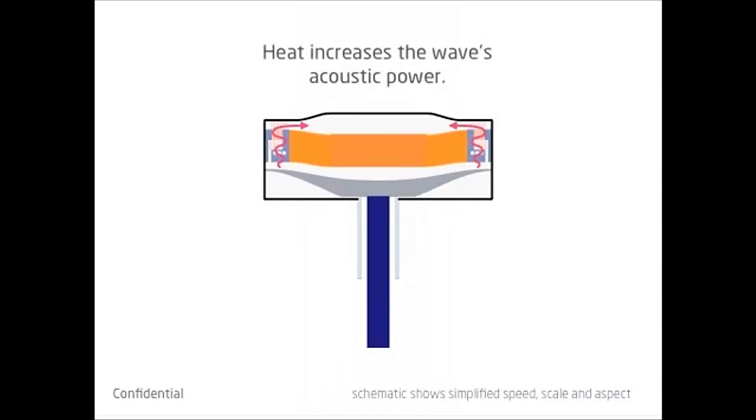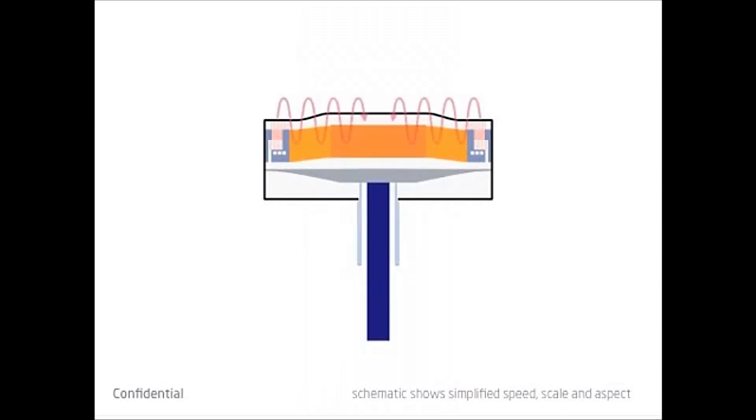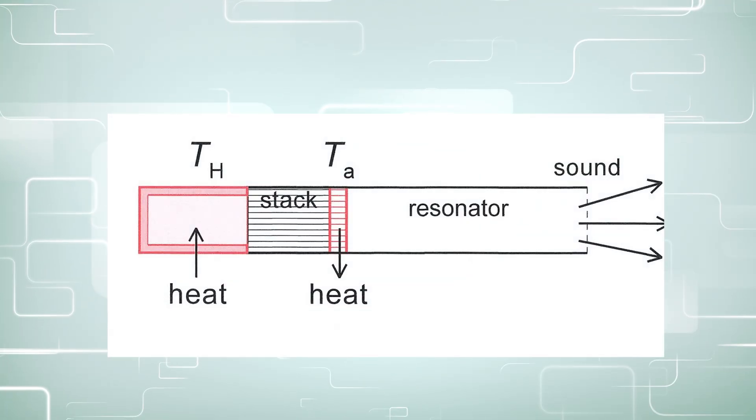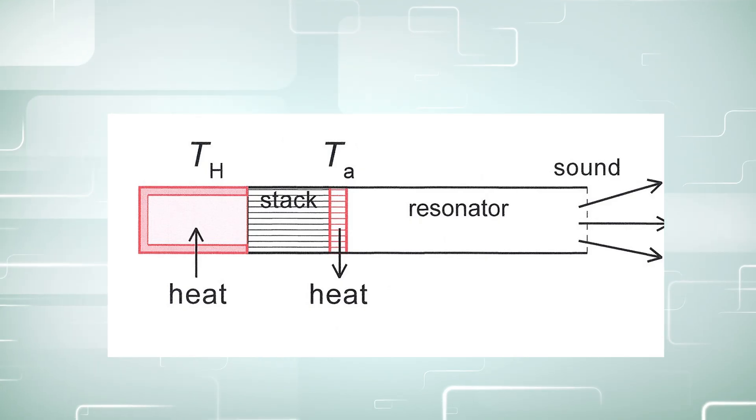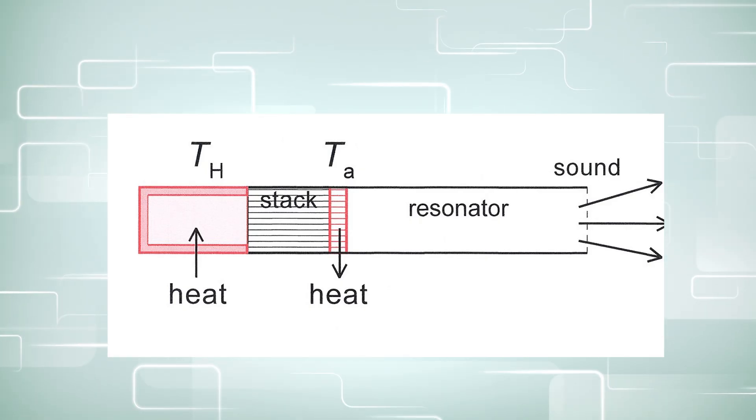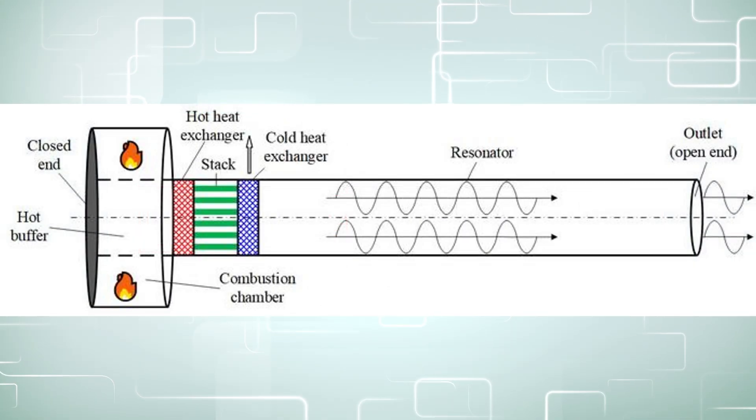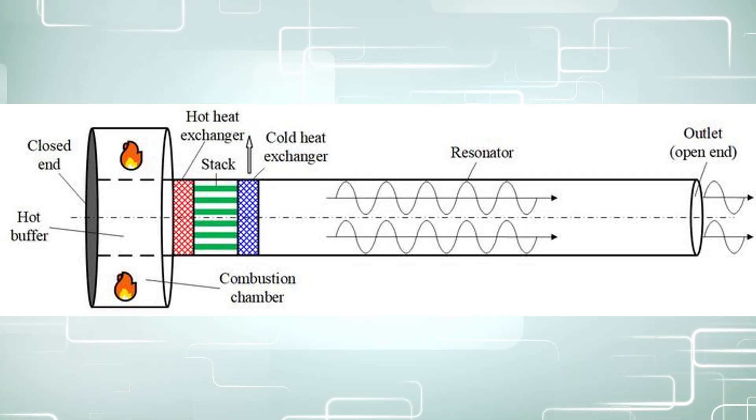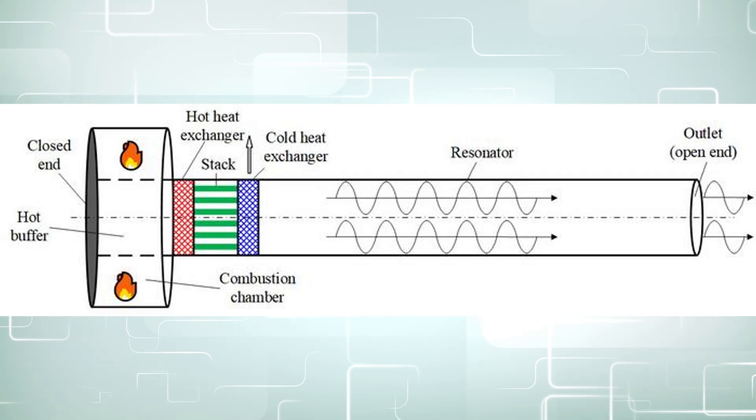So you can utilize a lot of different heat sources, including anything from sunlight to a natural gas burner. And you focus this into a part called a stack. The stack has to have a lot of surface area and low thermal conductivity. The temperature difference allows a gas to expand and contract, and this generates a pressure wave that becomes sound. And if you have a stronger temperature difference, then you can create stronger oscillations.